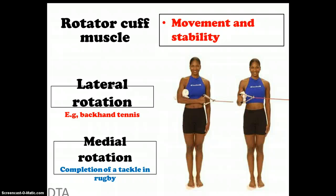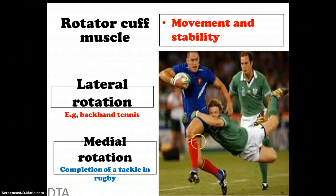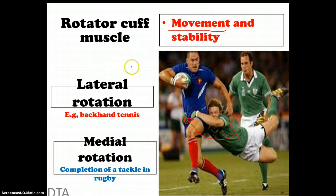The other type of movement from the rotator cuff muscles is the opposite — moving the hand from out here back across the body towards the midline. This is known as medial rotation, because it moves towards the midline, which is how we remember it. An example is completion of a tackle in rugby, where the arm moves from an extended position around and across — we would call this medial rotation.